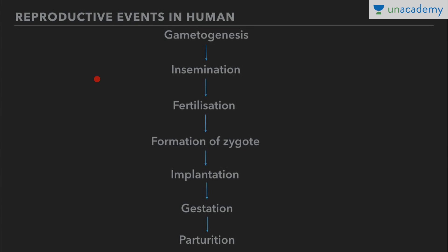Before moving to human male reproductive system, let's consider the sequence of reproductive events in humans, which is extremely important. First is gametogenesis — 'gameto' for gamete and 'genesis' for formation. So formation of gametes, and in humans we have male gamete as sperm and female gamete as ovum. So gametogenesis refers to formation of sperm and ovum.